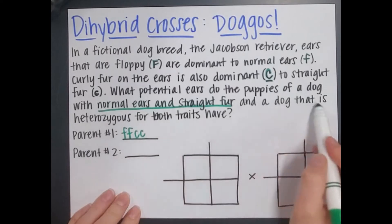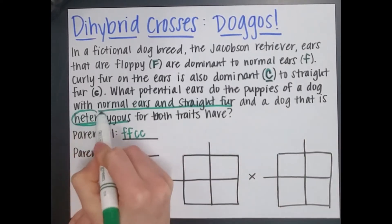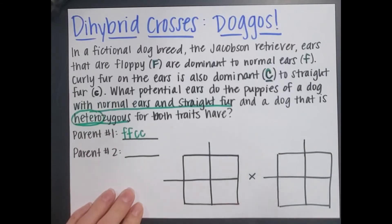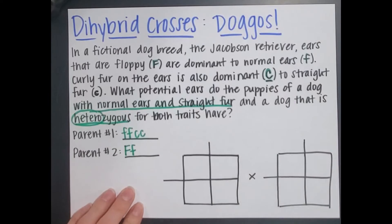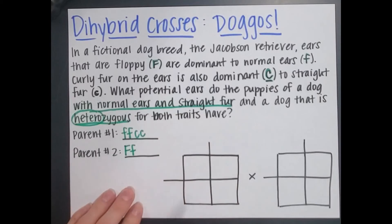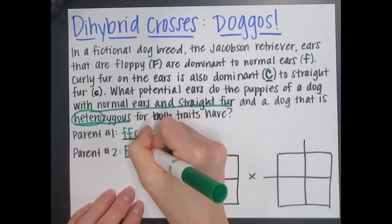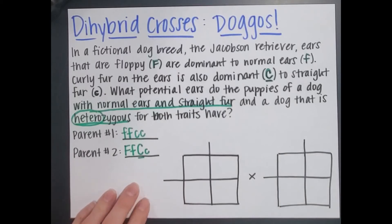For parent two — a dog that is heterozygous for both traits — hetero means different, so we need one of each allele. For floppy or normal ears they're going to be Ff, meaning they'll show floppy ears because the big F is dominant. If they're heterozygous for curly fur they'll have one big C and one little c — again I made the dominant C obvious with an underline.